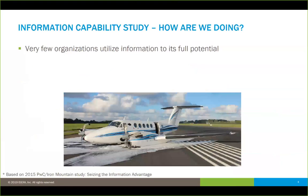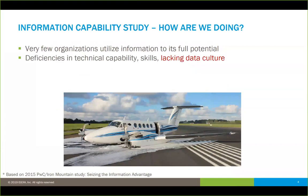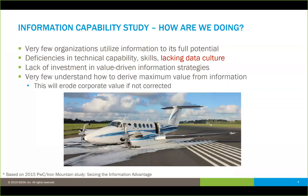Very few organizations are really using information to its full potential. Yet another study — the PWC Iron Mountain study, done in 2015 — shows consistency from four years ago to today: we're really not gaining ground in these areas. Deficiencies in technical capabilities, skills, and lacking a data culture are key factors. Lacking investment in value-driven information strategies also contributes to the problems. A lot of organizations really don't know how to derive maximum value from the information they have, and if that continues, their corporate value is going to be eroded.